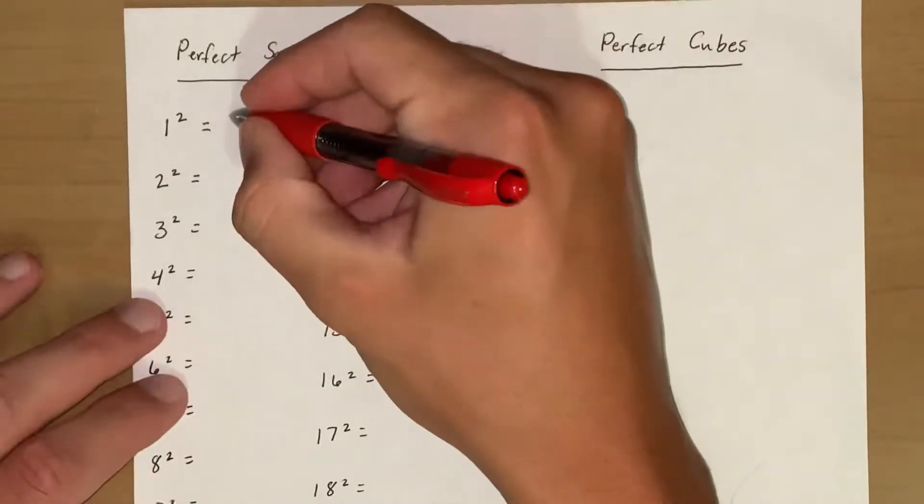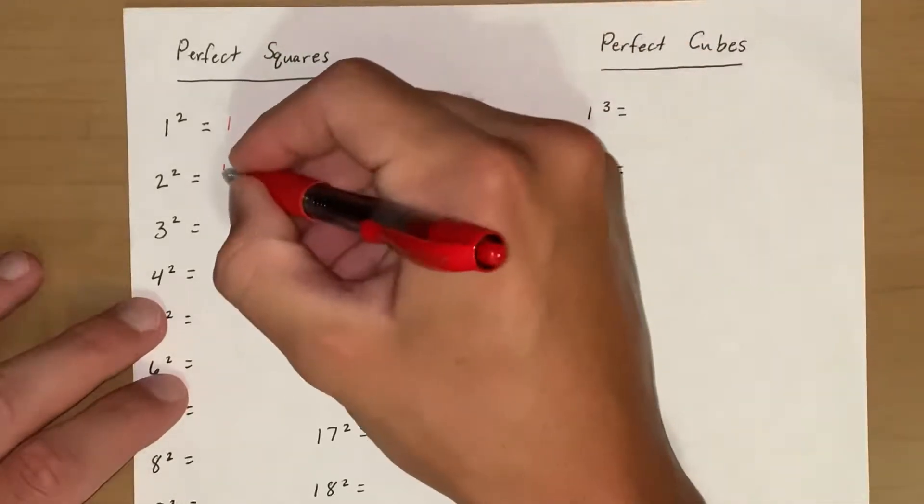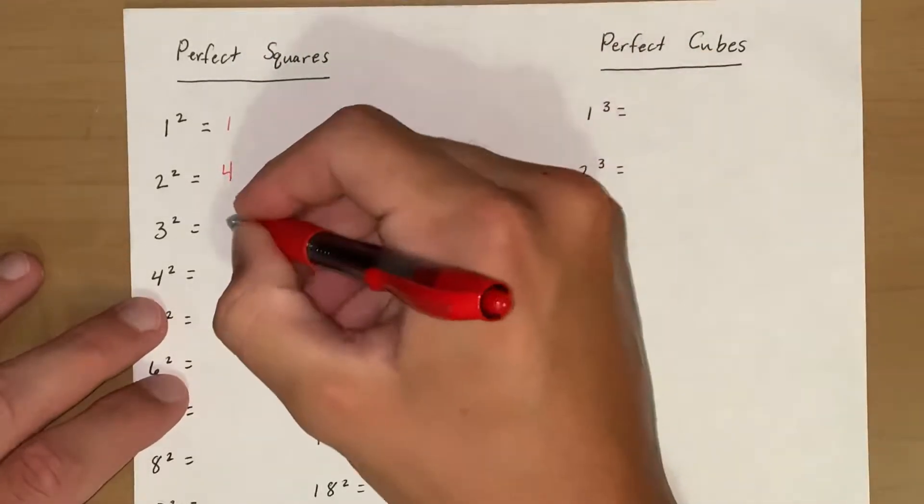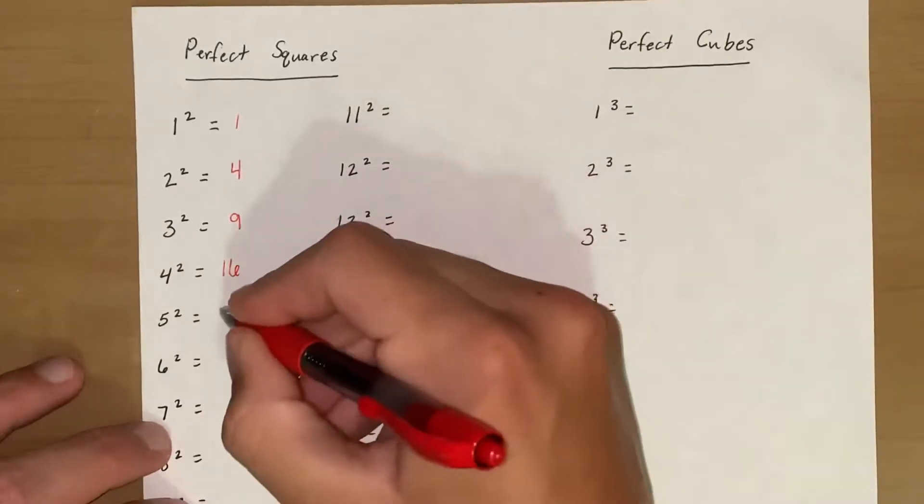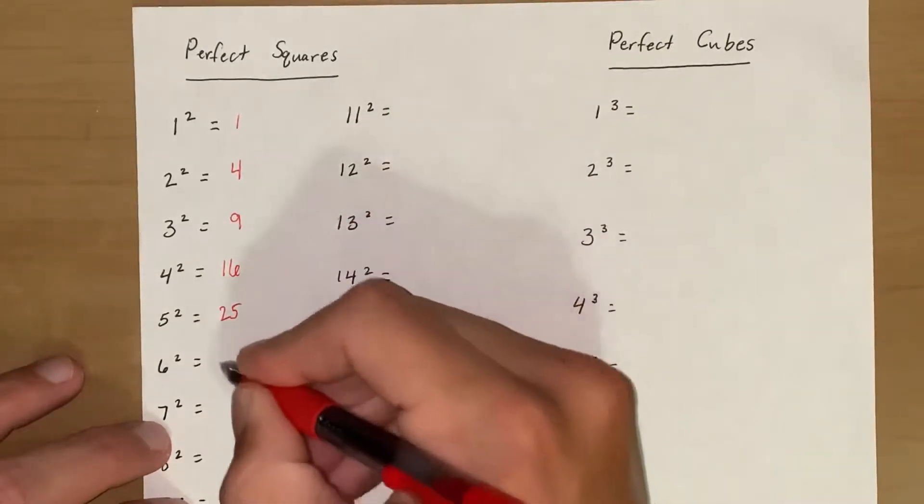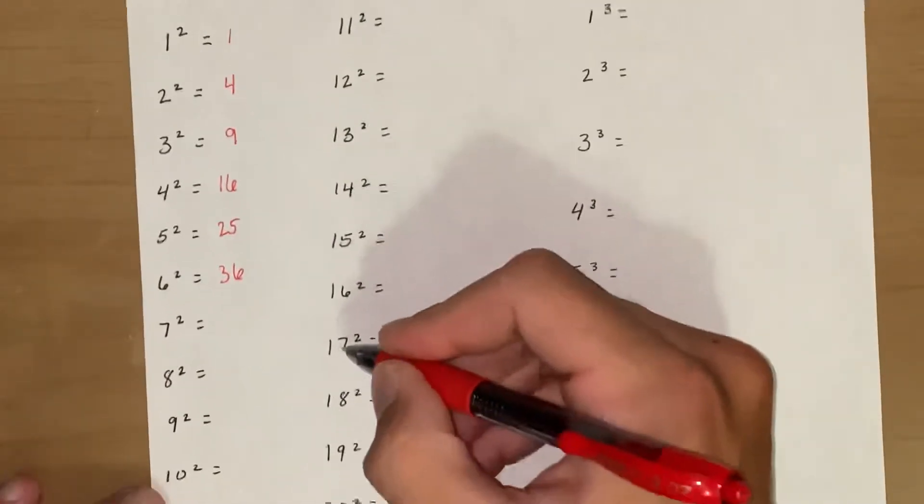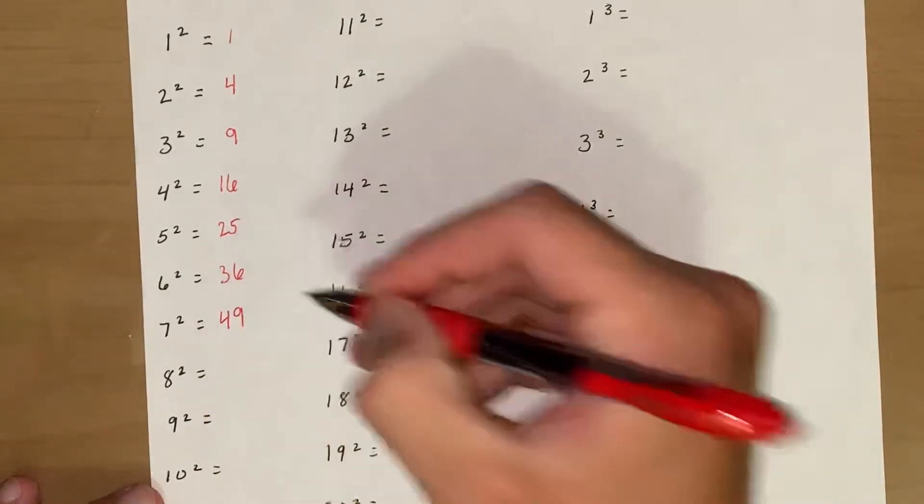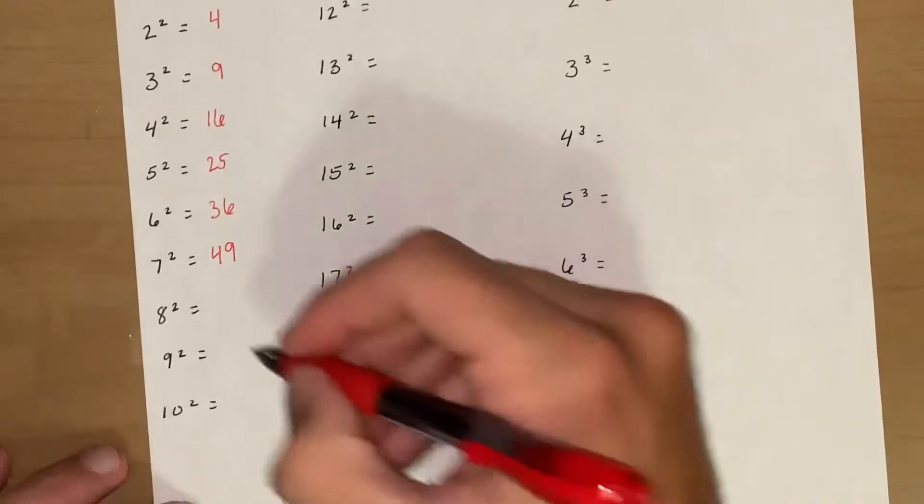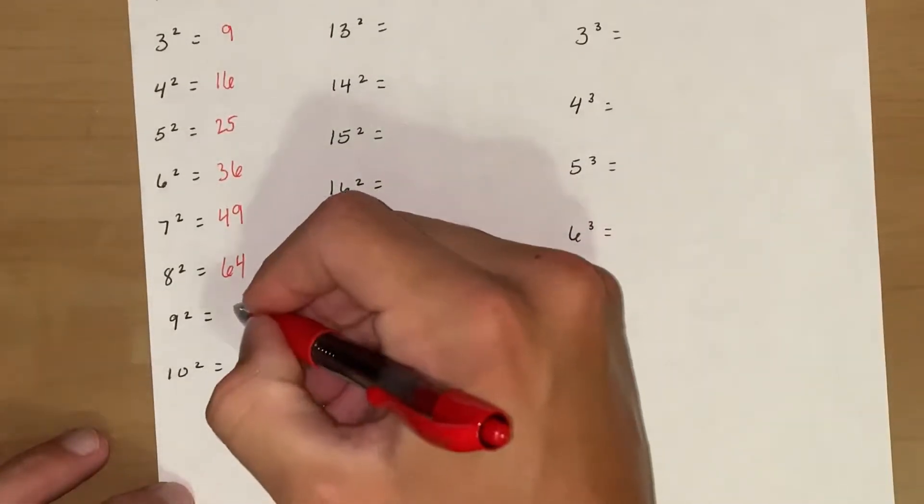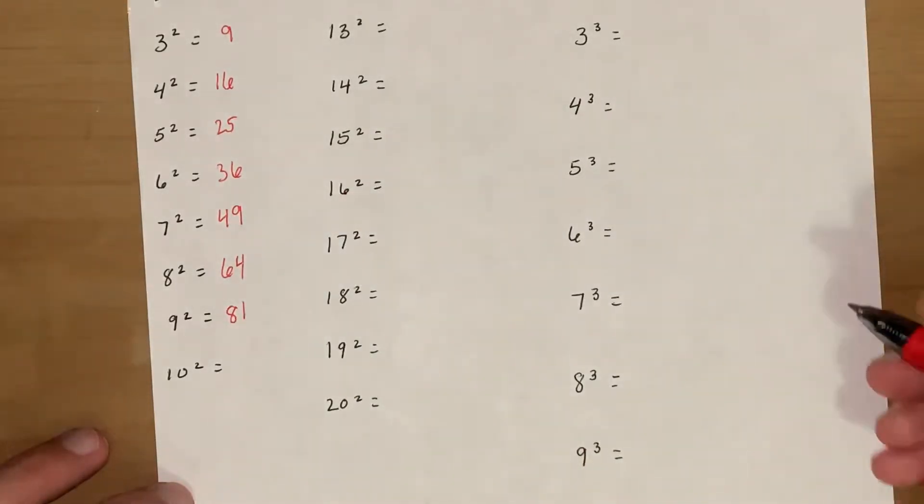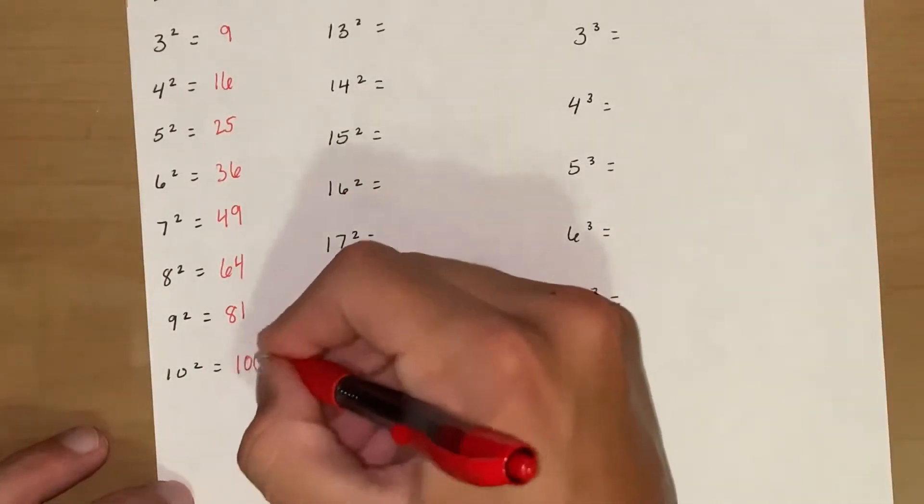Okay so 1 squared is 1, 2 squared is 4, 3 squared is 9, 4 squared is 16, 5 squared is 25, 6 squared 36, 7 squared is 49, 8 squared is 64, 9 squared is 81, and 10 squared would be 100.